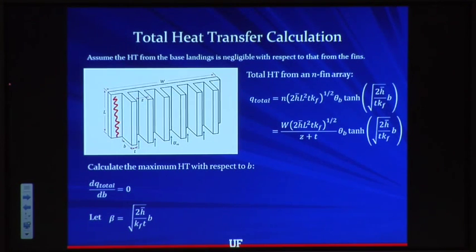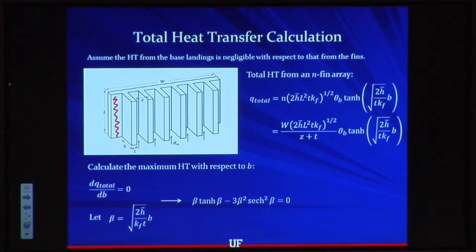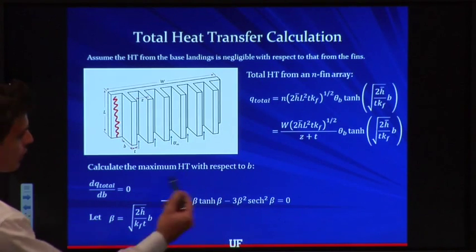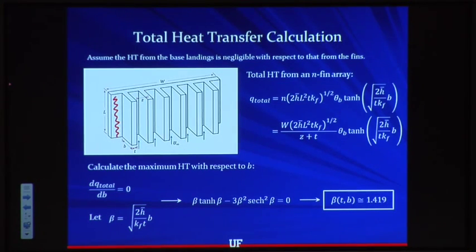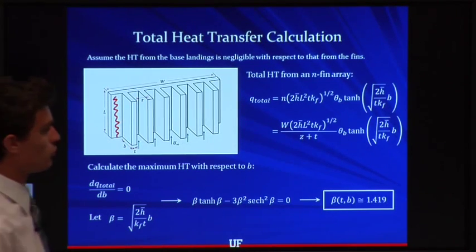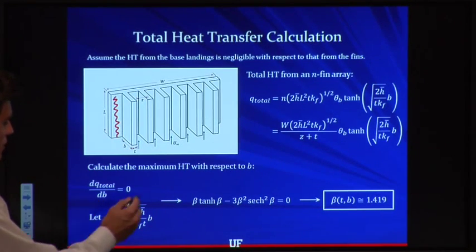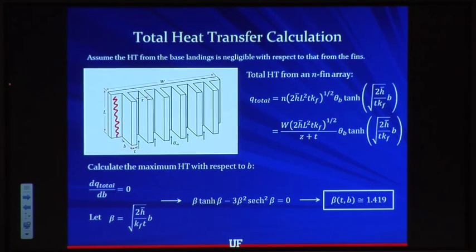For simplicity, we make the substitution that β equals the square root of (2h/kt) times b. Taking that derivative and making the substitution, we arrive at a hyperbolic trigonometric equation that can be solved numerically. Using a bisection method, which always converges as long as you bound the zero, we find that β equals 1.419 at the optimum height where dQ/db equals zero. This is a closure relationship we'll use in the final optimization.